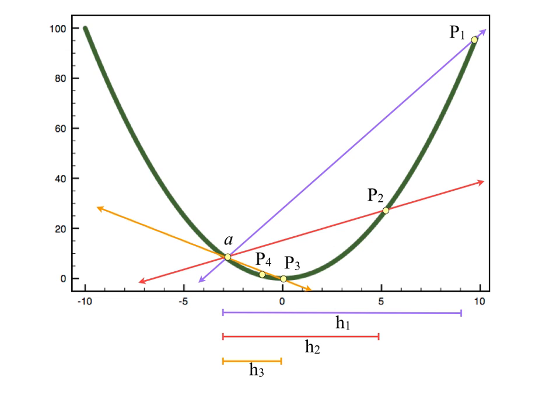Let's do this again. Now we have a point P4 which is yet still closer to the point A on the graph. We draw that secant line between those two — the red line — and now it's getting pretty difficult to see that it's only hitting the graph at two points. Here's our distance H4, the distance between A and P4 on the x-axis. When we started we had H1, then H2, H3, and H4. Notice those H distances are getting smaller, like we're thinking about them going to zero.